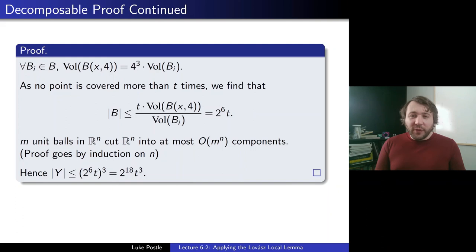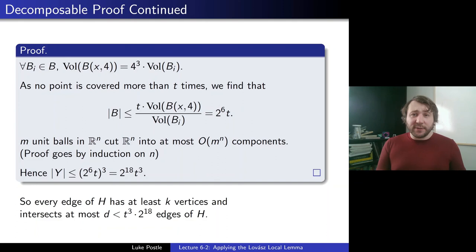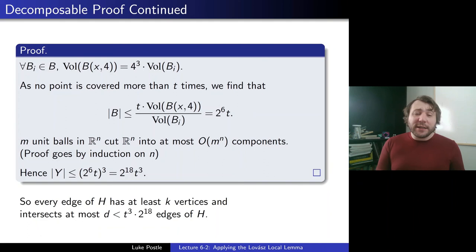So that was a lot of geometry, but now we're basically done. We've proven this nice geometric claim that no edge intersects too many other edges in H. We also know every edge of H has at least k vertices — since every point is in at least k balls and points are the edges. We show each edge intersects at most d < t³·2^18 edges of H. So we have a hypergraph with large edges that don't intersect too much.